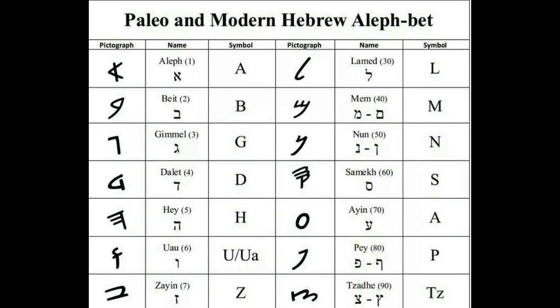As you can see right here, this gives you a chart of the Paleo — which is the pictographic — and the modern Hebrew alphabet, or Alephbet as it's commonly known, which is used in modern Hebrew today. There are tons of differences when it comes to the Paleo versus the modern Hebrew, and we're going to go in-depth, because you're going to see that they're basically two different languages.